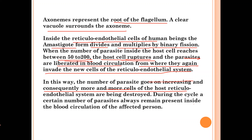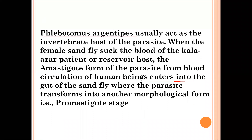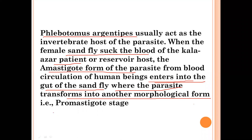During the cycle, a certain number of parasites are always present in blood circulation. When the female sandfly Phlebotomus argentipes sucks the blood of a Kala-azar patient, the amastigote form enters the gut of the sandfly. Inside the gut of the sandfly, the secondary host, the amastigote form transforms into another morphological form — the promastigote stage, also known as the leptomonad or flagellar form.